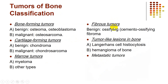In the category of bone-forming tumors, these include benign — osteoma and osteoblastoma — and malignant — osteosarcoma. In cartilage-forming tumors, the benign is chondroma and the malignant is chondrosarcoma. In marrow tumors we have myeloma. Fibrous tumors include central ossifying fibroma, and tumor-like lesions include Langerhans cell histiocytosis and hemangioma of bone.